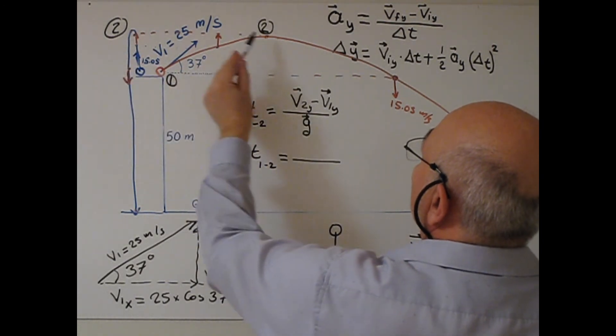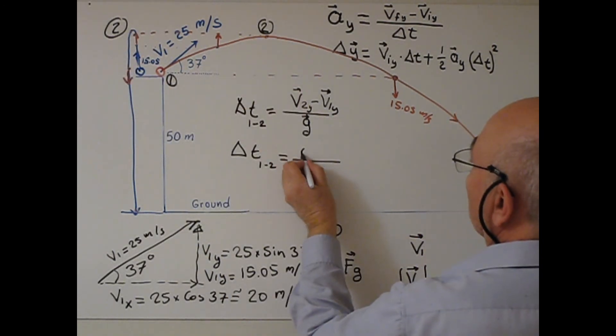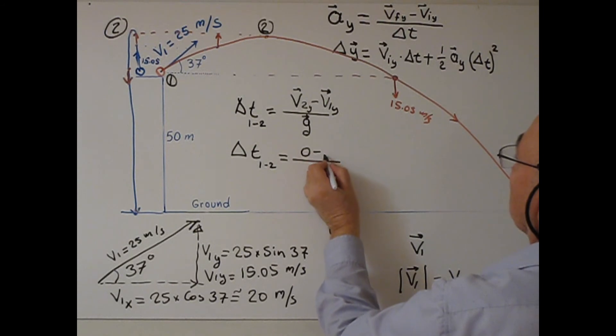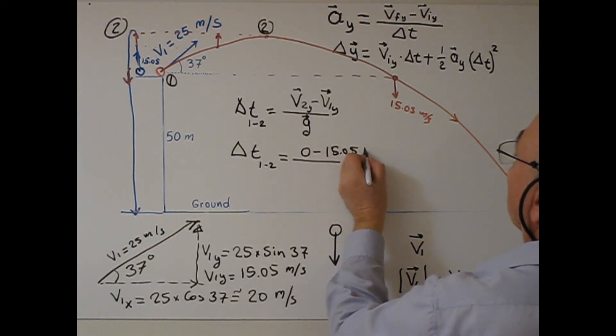So when I substitute our value here 1 to V2, V2Y, okay V1Y. V2Y will be 0 here, 0 here also, because when it comes to maximum height, it stops and go down. Minus,